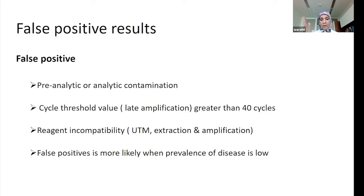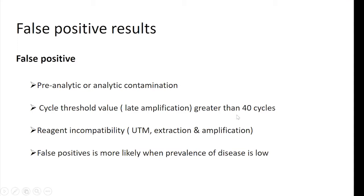Classically by cycle 20 or 25 you may detect something, and most assays have a cutoff up to cycle 38, for example. Anything amplifying up to cycle 38 is considered positive, and anything after that is negative. Some assays can go beyond 38 cycles.